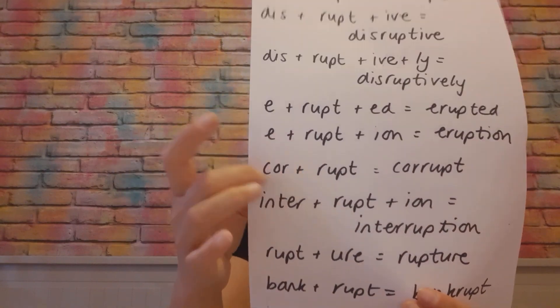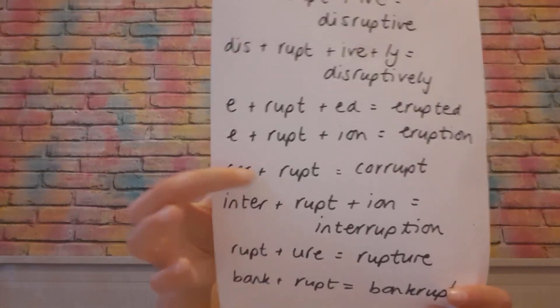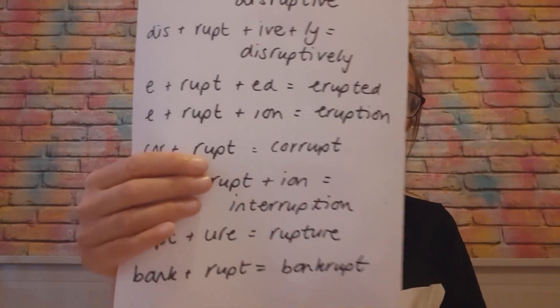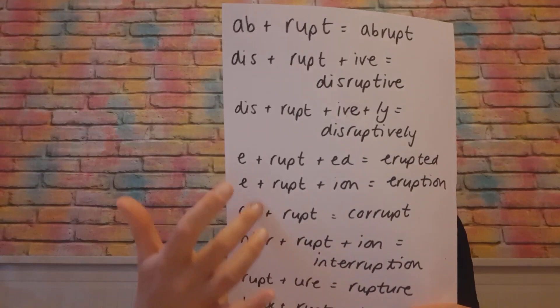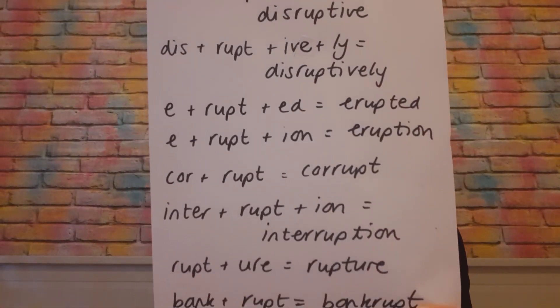Corrupt — the 'cor' here has been assimilated to 'cor' from 'com,' meaning 'with.' So we know that 'com,' 'con,' and 'cor' all mean 'with.' Corrupt means sort of 'breaking with.' So if you corrupt somebody, you're getting them to bend the rules, but you're colluding with them to do that — breaking with them. Something corrupted means it's broken within.